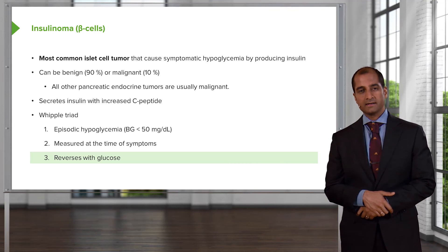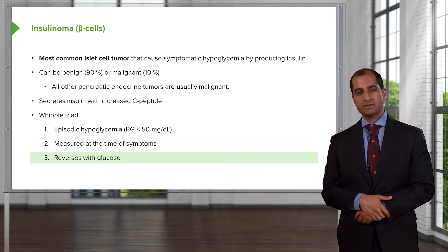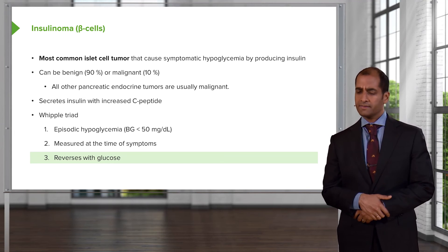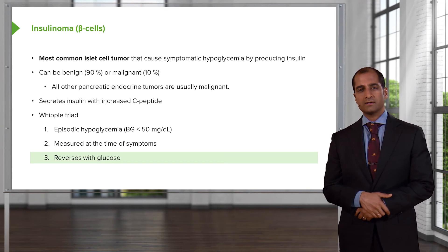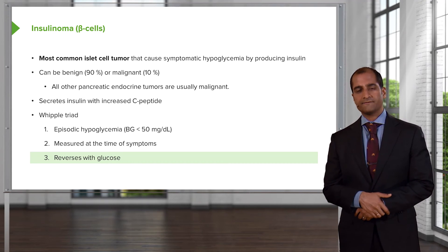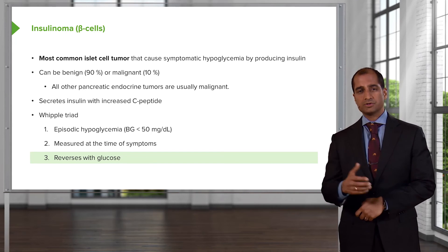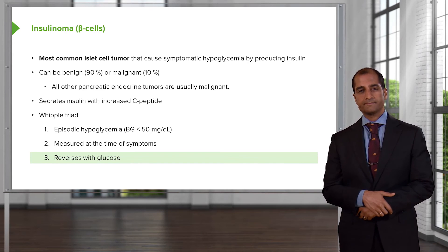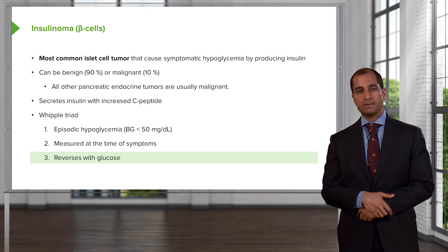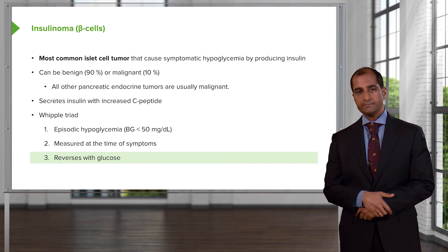Keep in mind that whenever you have an insulinoma, think about what other endocrine organs might be affected. Could it be hyperparathyroidism? Could you find hypercalcemia in your patient? Could it be a prolactinoma with galactorrhea and loss of libido? All part of MEN1.